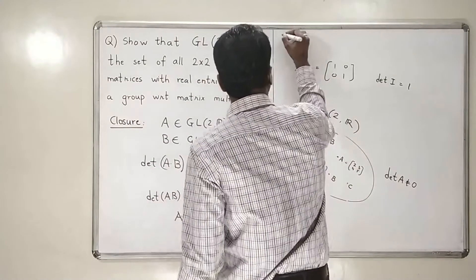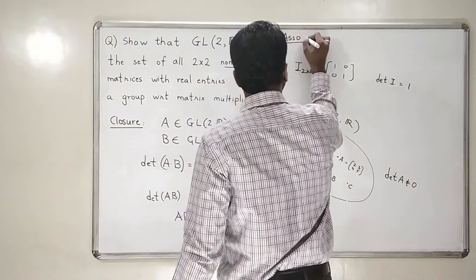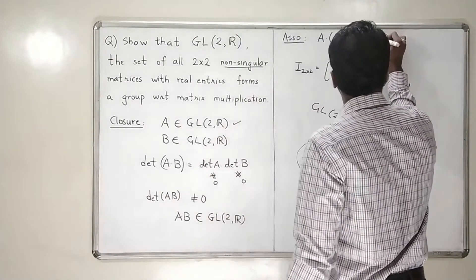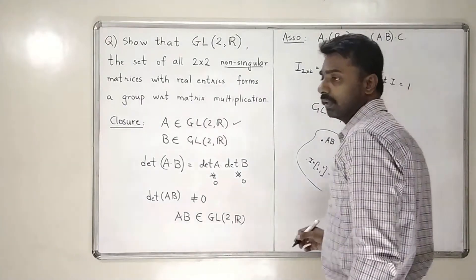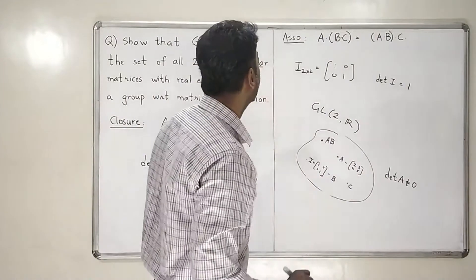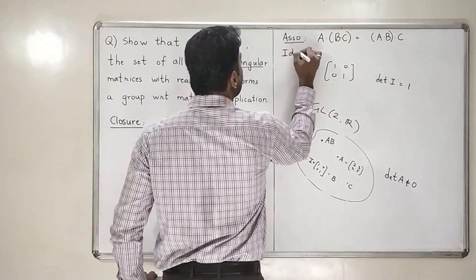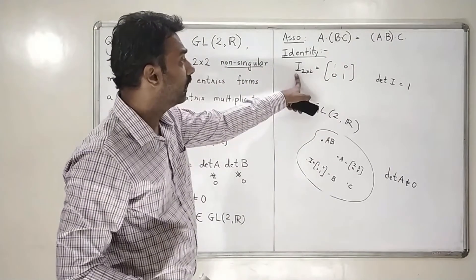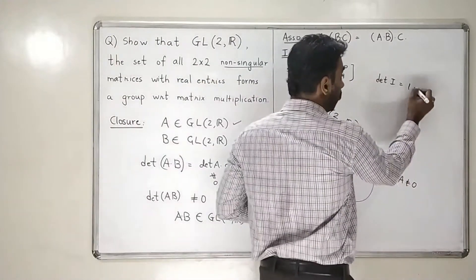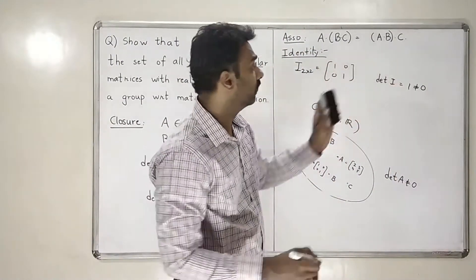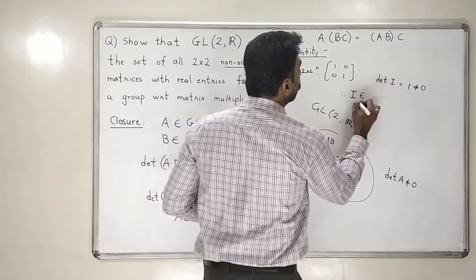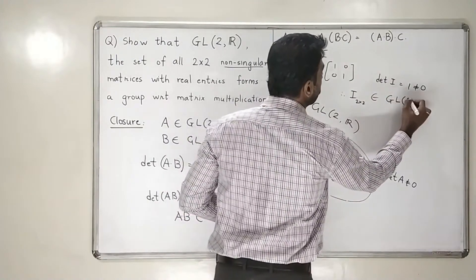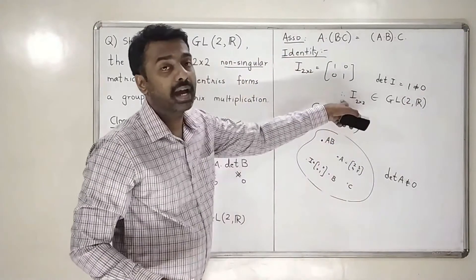Now let us go to the second one, which is associativity. You know that A into (B into C) matrix is always equal to (A into B) matrix multiplied by C matrix. This will always be true, so I will leave this as an exercise for you. What is the identity of the set? It is clear that the identity matrix has determinant 1, which is not 0. So identity matrix is a non-singular matrix, and therefore the 2x2 identity matrix belongs to the set GL2R. This will work as my identity element.